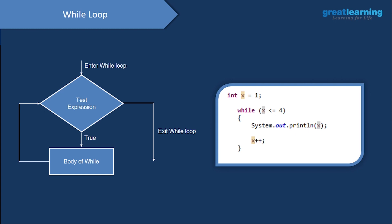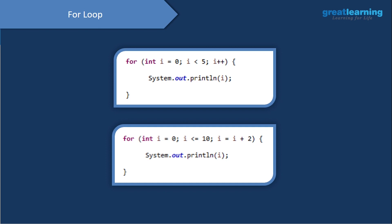Now let's see the for loop. The syntax is: for(int i = 0; i < 5; i++), then print i. This will print 0 through 4. If you want to increment by 2, write i = i + 2 — so output will be 0, 2, 4. Let's go to Eclipse to see this in action.